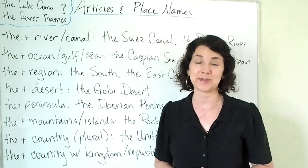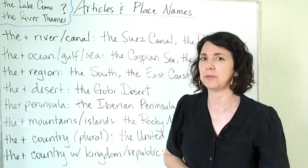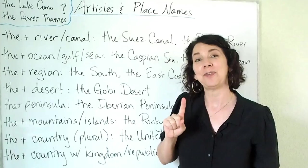One of the things that you need to know is how to use articles for place names. For example, do we say the Lake Como or the River Thames? Only one of those is correct, and we'll find out which one and why during our lesson today.